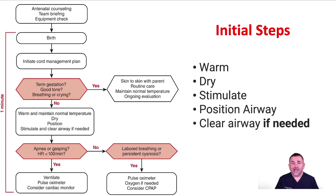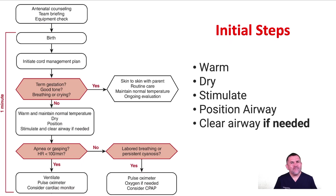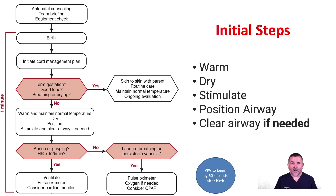If the baby does not have apnea or gasping and the heart rate is at least 100, we should ask if there is labored breathing or persistent cyanosis. If yes, attach the pulse oximeter, provide oxygen if needed, or consider continuous positive airway pressure (CPAP). If the baby has apnea or gasping and/or heart rate below 100, immediately start to ventilate and call for help if alone. Remember that the most important step in neonatal resuscitation is ventilating the baby's lungs. PPV should start within one minute of birth, and then pulse oximeter and cardiac monitor can follow.